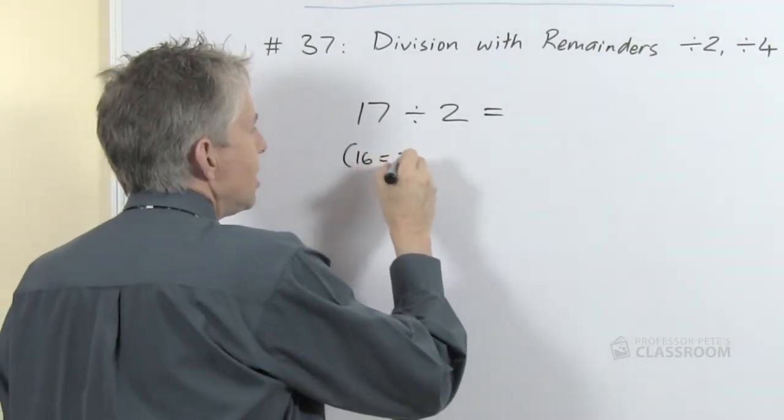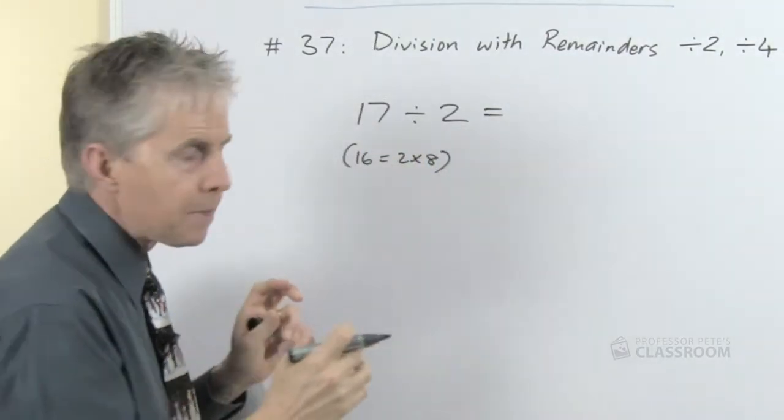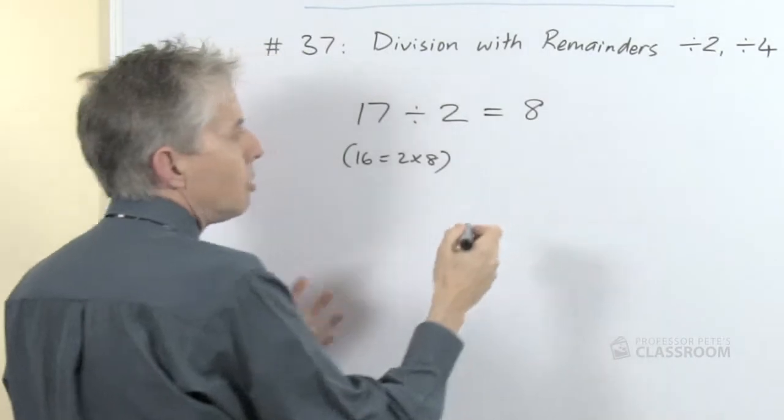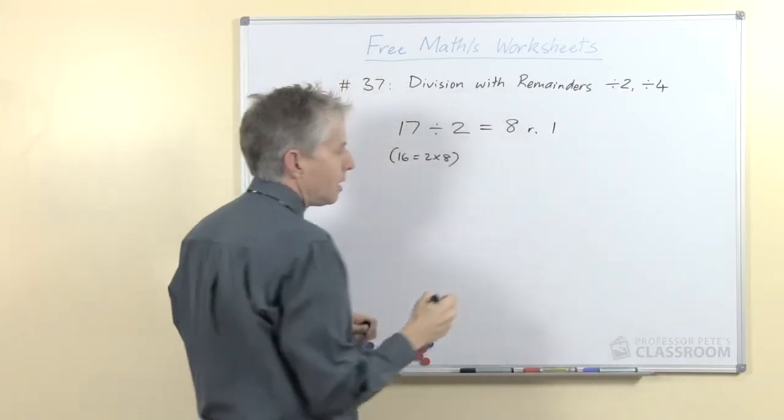So we can think to ourselves: 16 is 2 times 8—that's the number fact we have to recall. So the answer will be 8. Eight lots of 2 are 16. How many extras are there? How many are left over? That's 1.